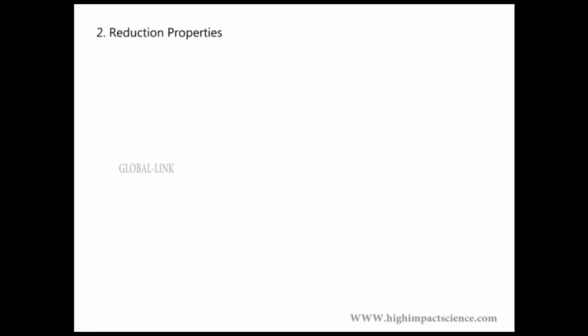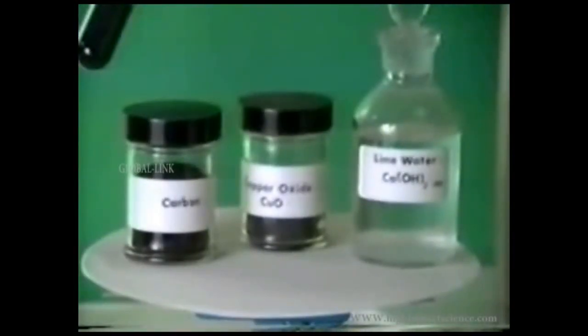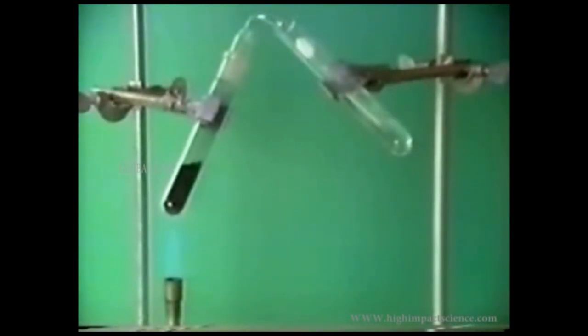Reduction properties of carbon. In this experiment, we shall heat together a mixture of black carbon powder and black copper-2 oxide. The gas evolved is passed into a solution of calcium hydroxide or lime water. We notice the white precipitate of calcium carbonate formed as the gas is bubbled in the lime water.